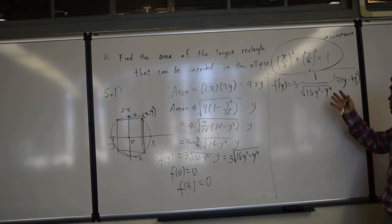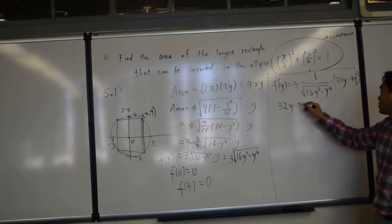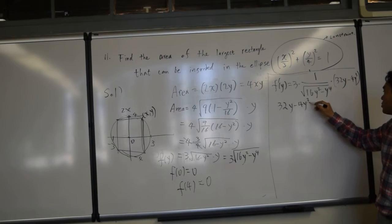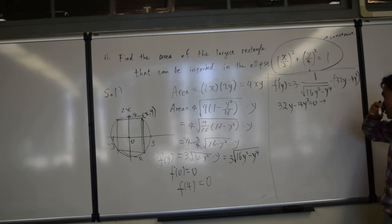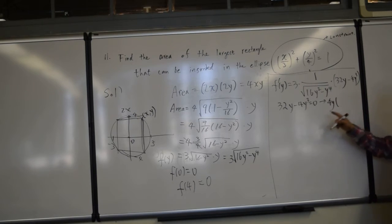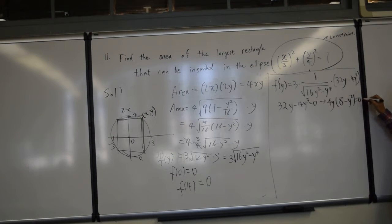Now, when can this become 0? When this is equal to 0, right? So we set 32y minus 4y cubed equal to 0, which gives you, if I factor the 4y, let's see, that'll be 8 minus y squared equal to 0. So either y is 0 or y is 2 radical 2, because either y is square root of 8 or y is 0. The square root of 8 can be simplified to 2 radical 2.